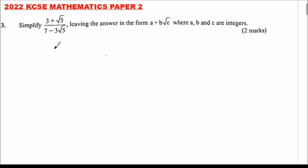Simplify (3 + √5) ÷ (7 - 3√5), leaving the answer in the form a + b√c, where a, b, and c are integers.